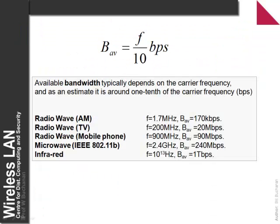The available bandwidth is typically related to the frequency. As a quick approximation, the available bandwidth is around one tenth of the actual frequency. So for a radio wave at 1.7 megahertz, we can have a bandwidth of about 170 kilobits per second. For a microwave at 2.4 GHz, we can have a total bandwidth of about 240 megabits per second. And for infrared, such as fiber optics, we can have an extremely large available bandwidth.